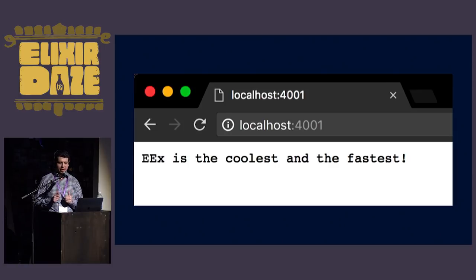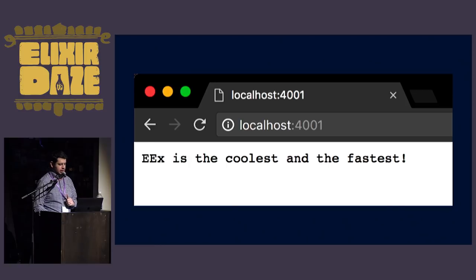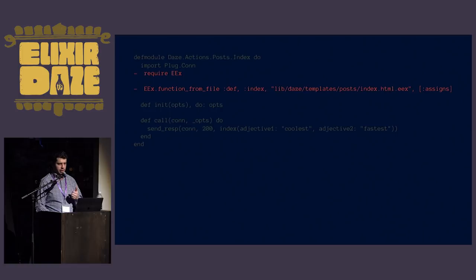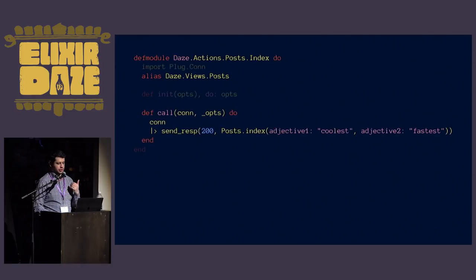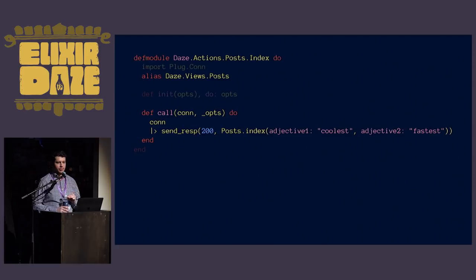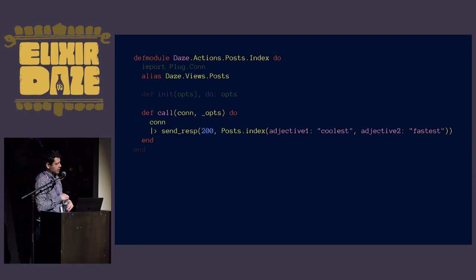I found EEX pretty simple to use and really powerful. Let's extract that into a view, because I do like how Phoenix separates templates, views, and controllers. We grab that EEX code and throw it into the view. Now our action just aliases the view and calls it. Rolling my own really gave me clarity that this is just a module and we're calling a function in that module - it just so happens that function is a compiled template. We run a sanity check and everything works.